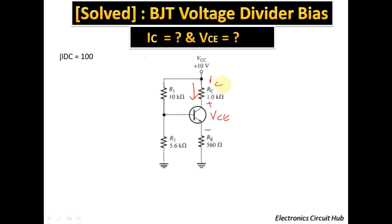We are using an NPN transistor, as you can see from the symbol. The component values are: RC = 1 kΩ, RE = 560 Ω, R1 = 10 kΩ, and R2 = 5.6 kΩ. The supply voltage VCC is 10 V. Both R1 and R2 are tied to the 10 V supply.